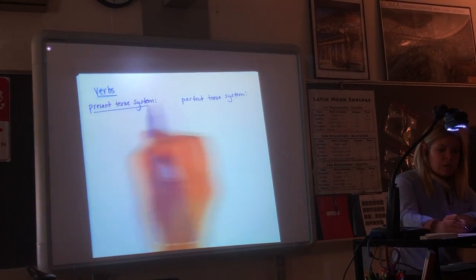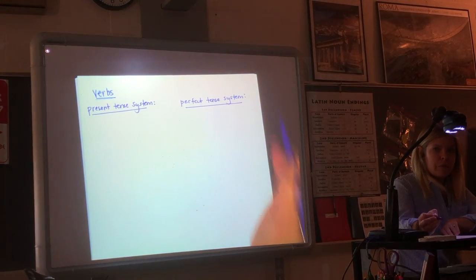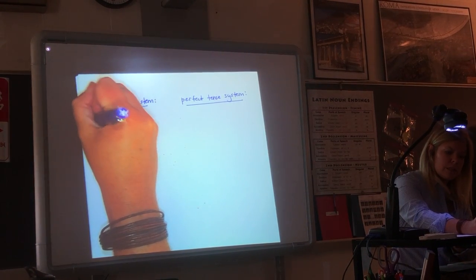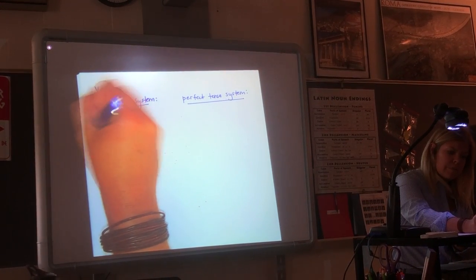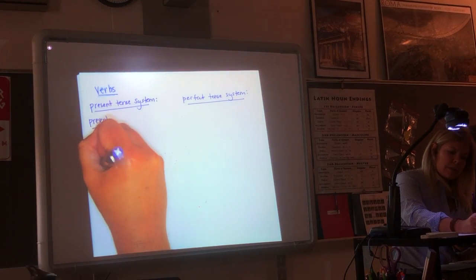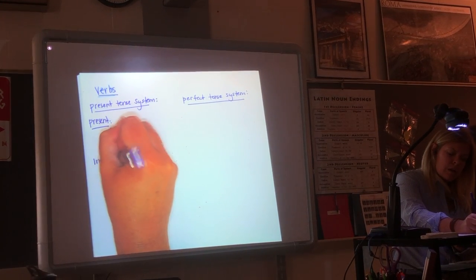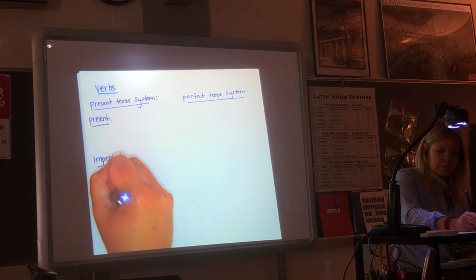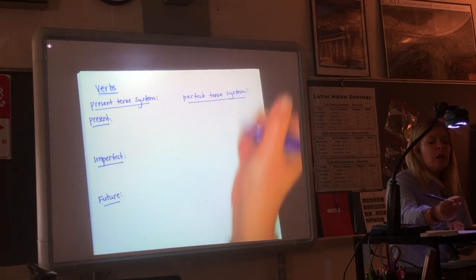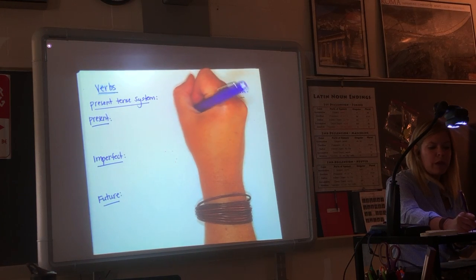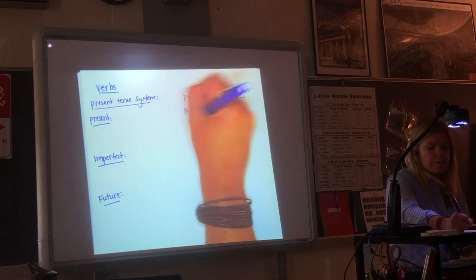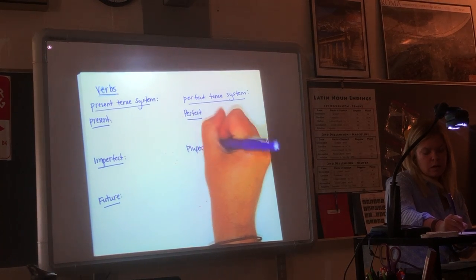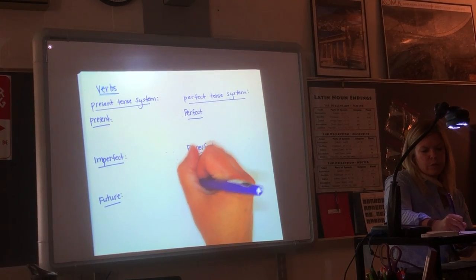Each of those is made up of three different parts. So the present tense system is the present, the imperfect, and the future. The perfect tense system is the perfect, the pluperfect, and the future perfect.